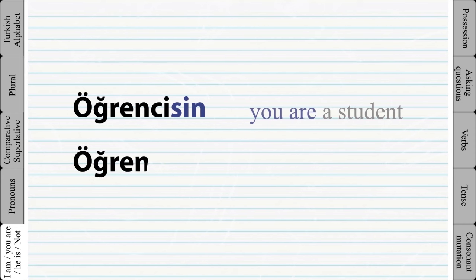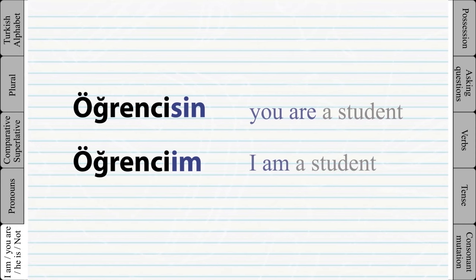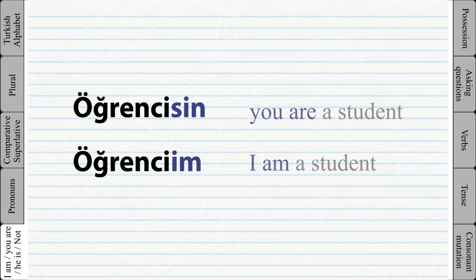Let's look at the second example: 'I am a student'. As you can see, the last vowel of the word is 'i' and the personal ending is also 'i'. When we have two vowels after one another, a letter 'y' should be used between the two vowels.